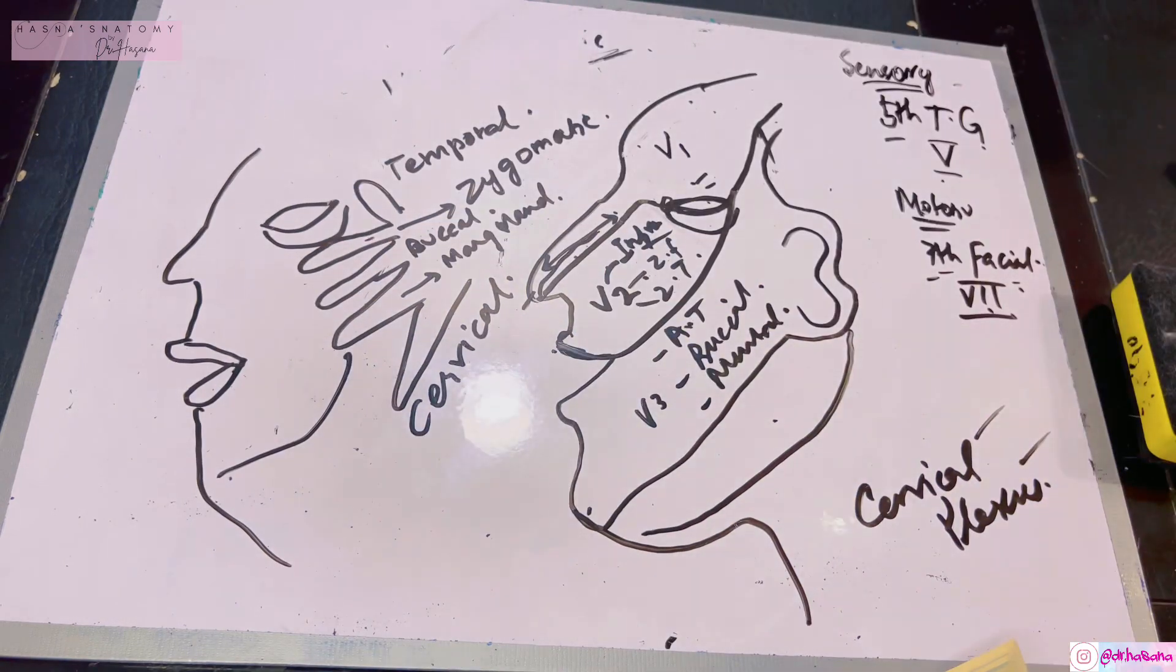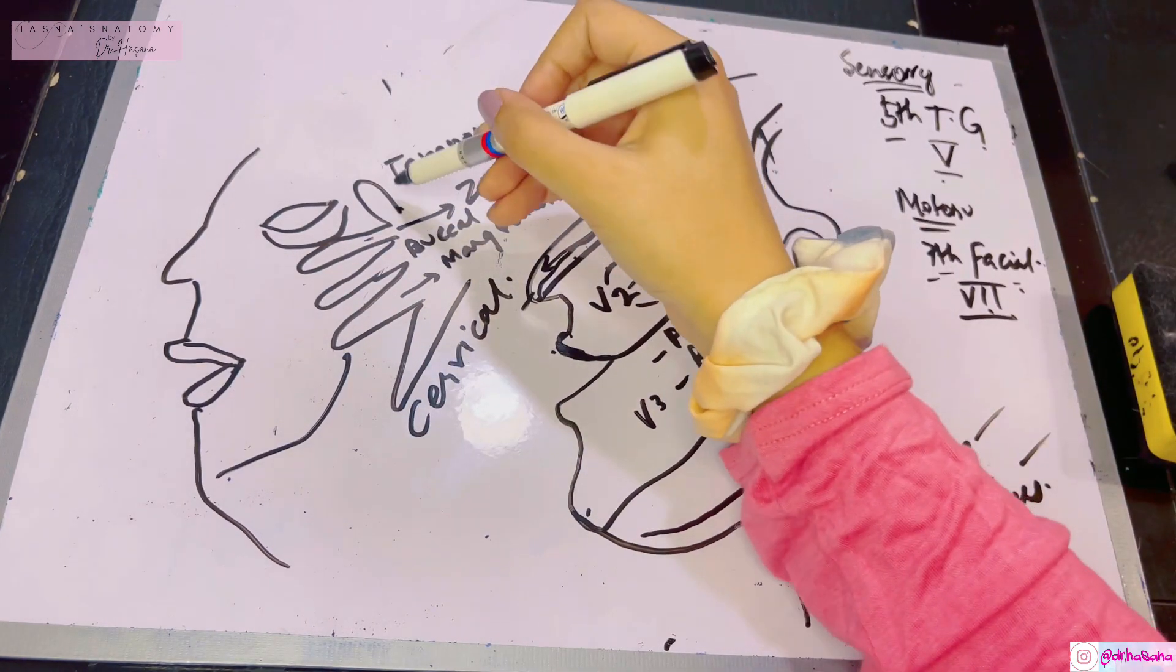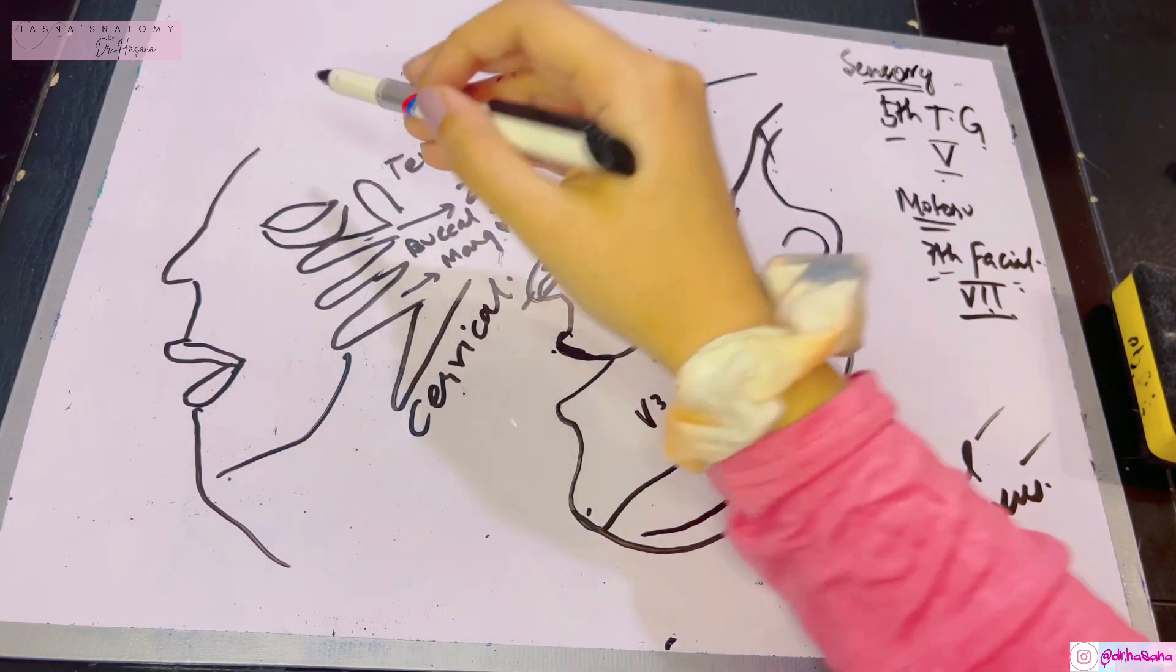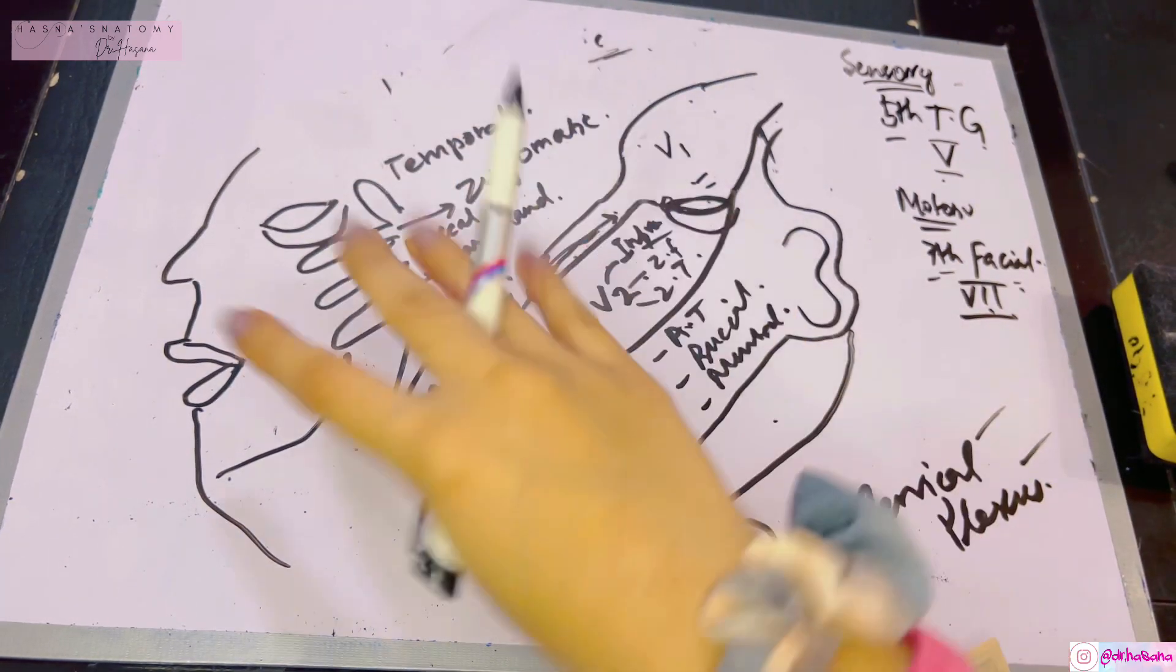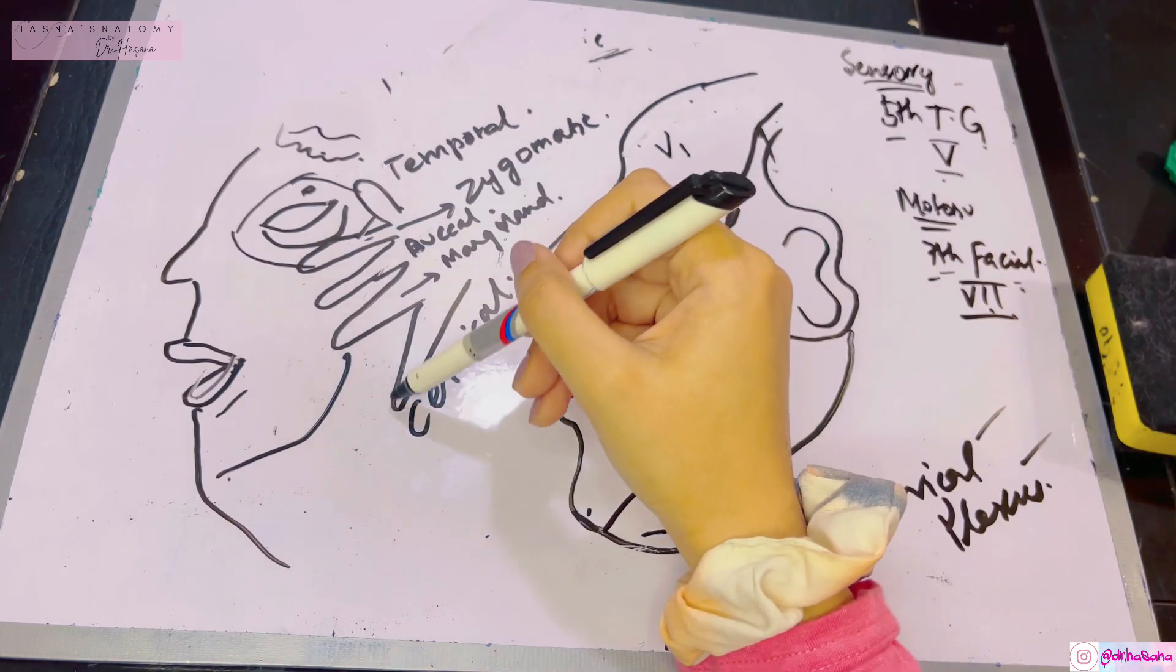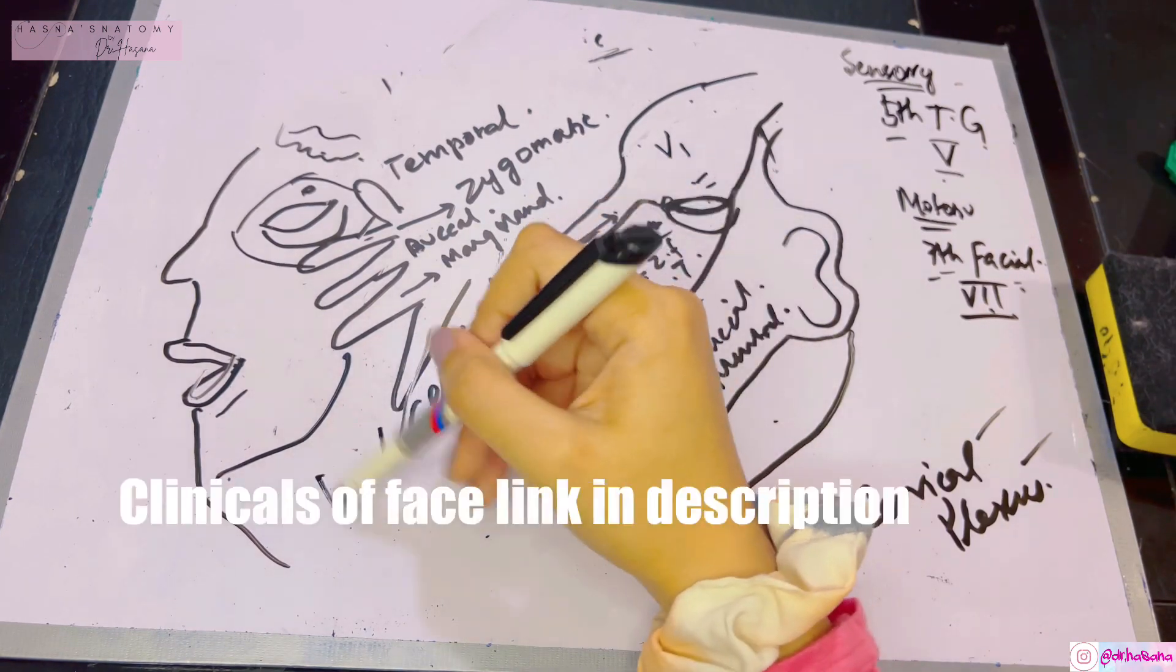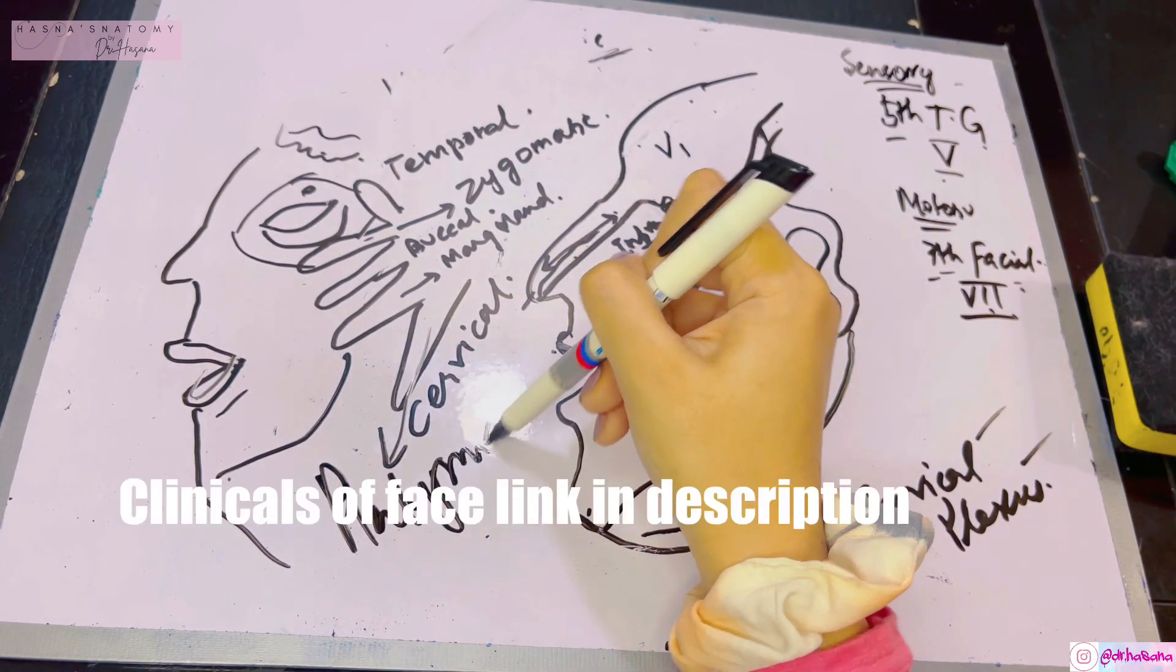Pointing towards the neck is the cervical branch of the facial nerve. The thumb will supply the muscles existing there, and all the fingers, according to where they're pointing, supply the muscles over there. The cervical branch will chiefly supply your platysma muscle.